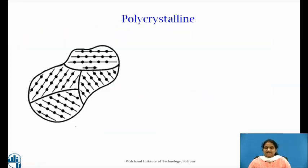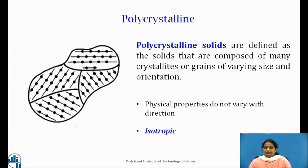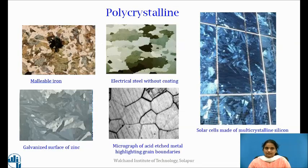Polycrystalline solids are defined as solids composed of many crystallites or grains of varying size and orientation. These grains are separated by well-defined boundaries but oriented in different directions. Each grain is a single crystal of an irregular shape. Polycrystalline material is isotropic as their physical properties do not change with direction.